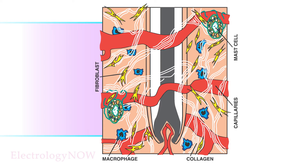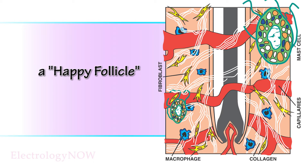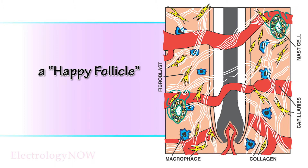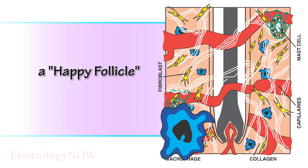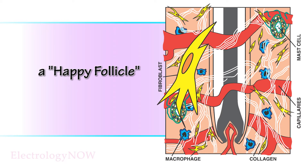First, let's see how the dermis heals. Here's an untreated happy follicle with normal structures in the skin. Here's a quick review: here's the mast cell — when stimulated, it releases chemicals that cause inflammation. The capillaries react instantly and carry more blood. Macrophages gobble up bacteria and dead tissues, and the fibroblasts fill in the area with collagen.